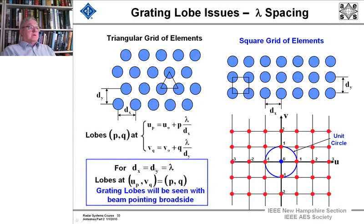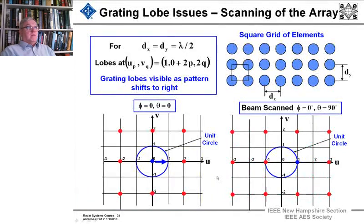Now, if we go to dx equals dy equals lambda, we get these equations that say grating lobes will appear at u sub p and v sub q equal to p and q. They'll be at every integer place on this matrix. And grating lobes will be seen with the beam pointing broadside here on the edges.